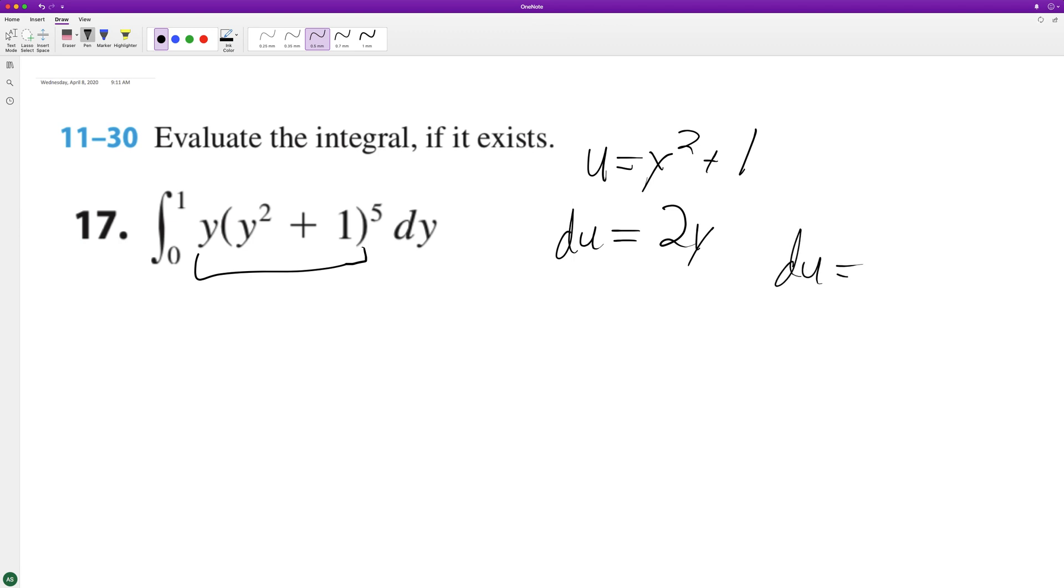So to get du equal to dy, we need to multiply it by one half because of the two y. So one half, zero to one, this is u raised to the fifth du.